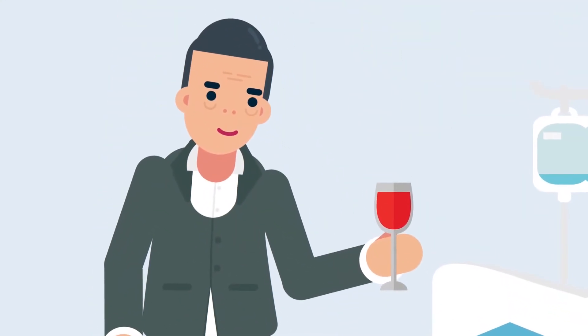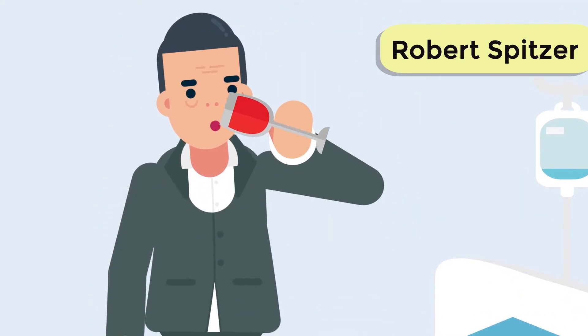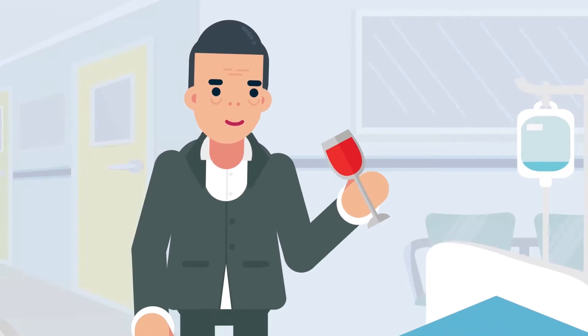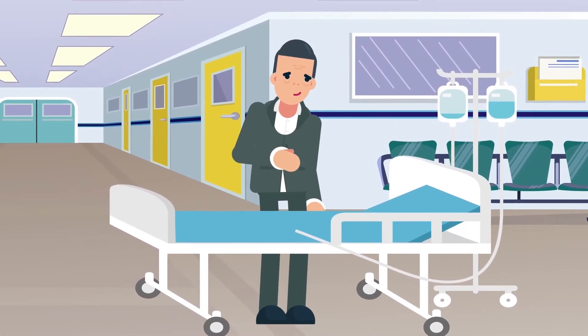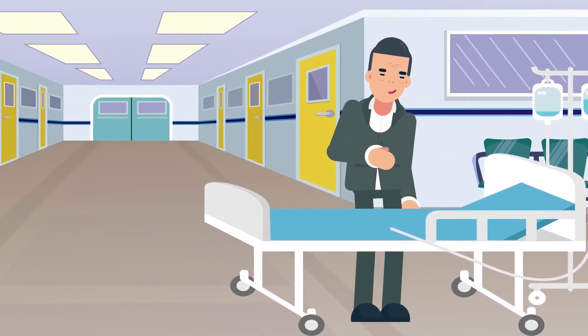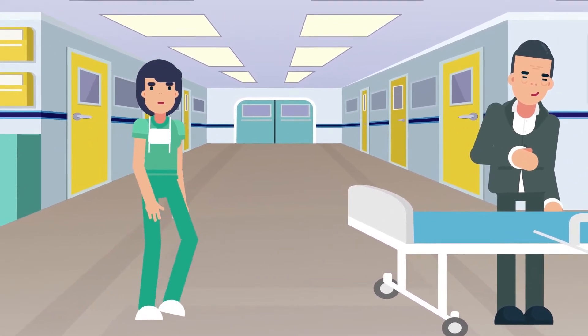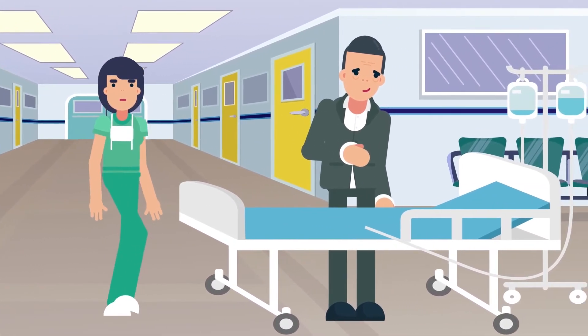'If I were to drink a quart of blood and, concealing what I had done, come to the emergency room of any hospital vomiting blood, the behavior of the staff would be quite predictable. If they labeled and treated me as having a bleeding peptic ulcer, I doubt that I could argue convincingly that medical science does not know how to diagnose that condition.'